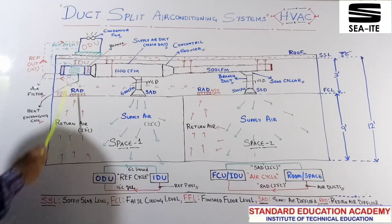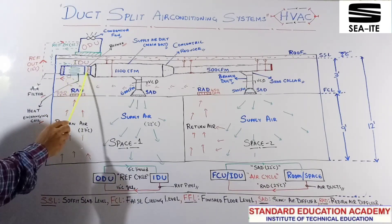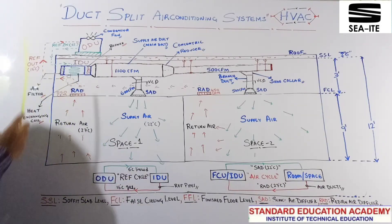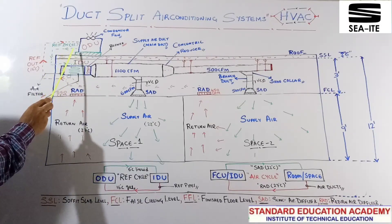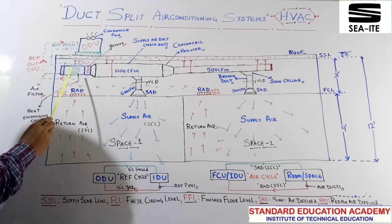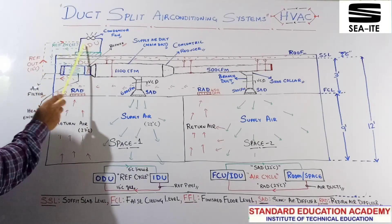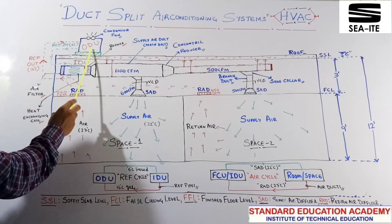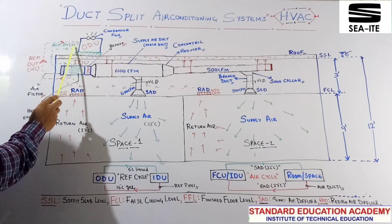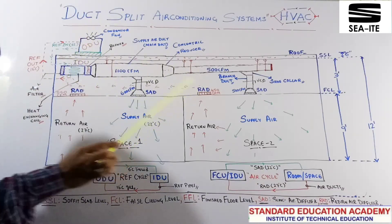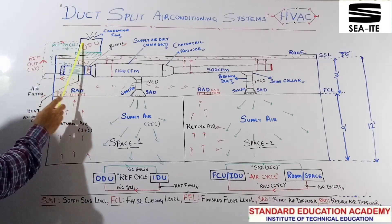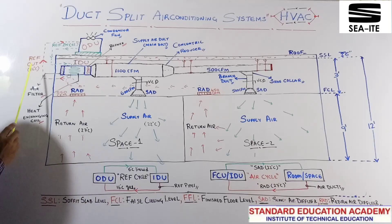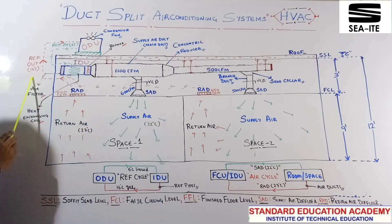In indoor unit, you will find again heat exchanging coil, blower, that is the evaporator section, and filters. From outdoor to indoor you will find refrigerant in, and from IDU to ODU refrigerant out. ODU to IDU, refrigerant in at a temperature of 6 degree Celsius and the refrigerant state will be in liquid state. From IDU to ODU, refrigerant out at a temperature of 6 degree Celsius and the state of the refrigerant will be condensate gas.